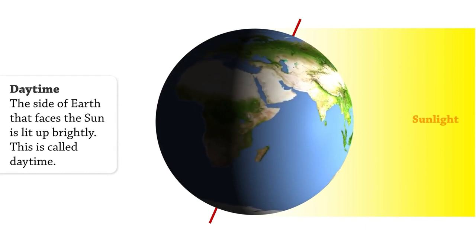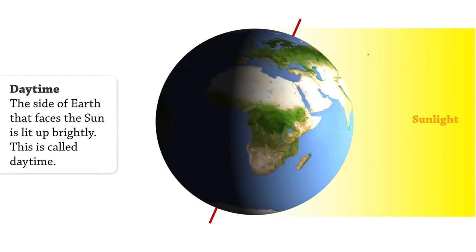The side of Earth that faces the sun is lit up brightly. This is called daytime.